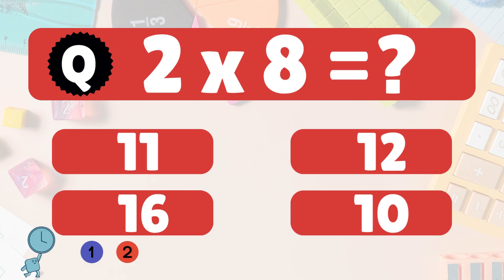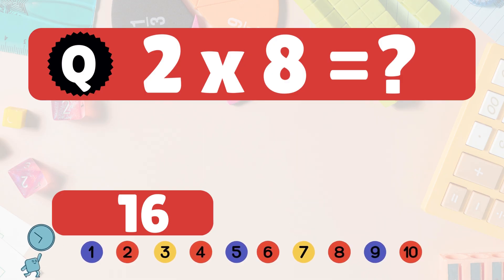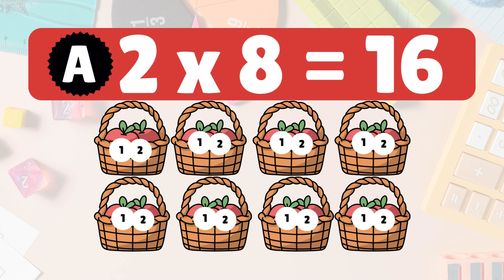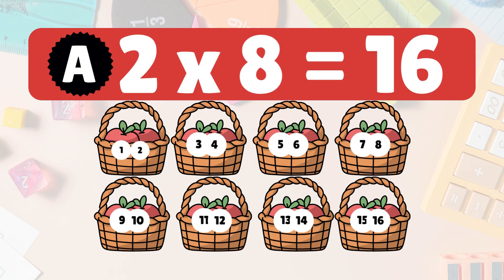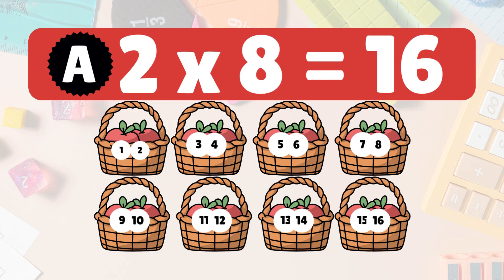Next, 2 times 8 is what? 2 times 8 is 16. Here we have 8 groups of 2 apples each. Let's count them all: 1, 2, 3, 4, 5, 6, 7, 8, 9, 10, 11, 12, 13, 14, 15, 16. So 2 times 8 is 16 apples.